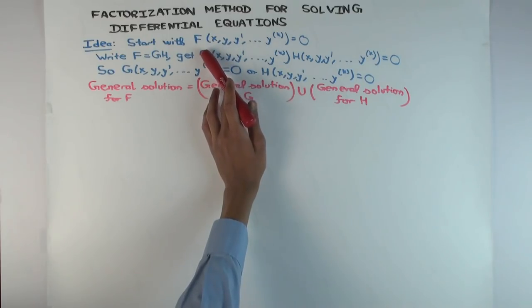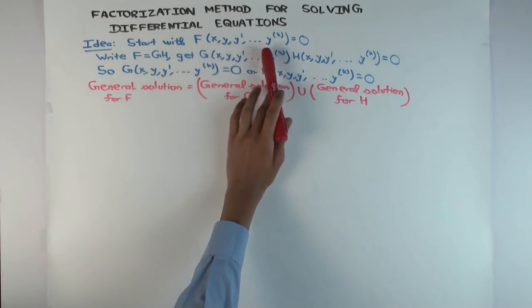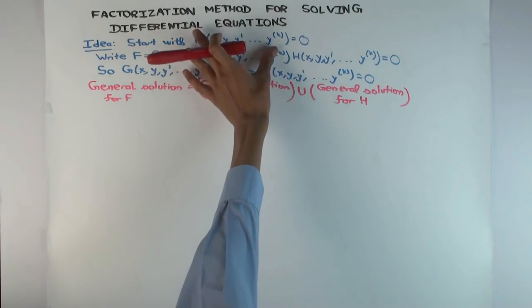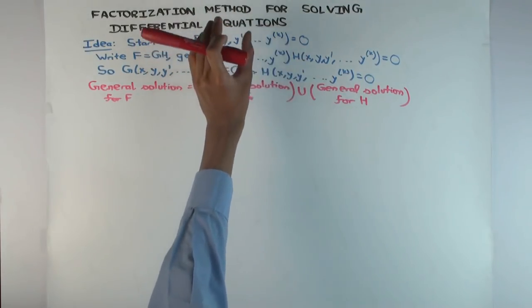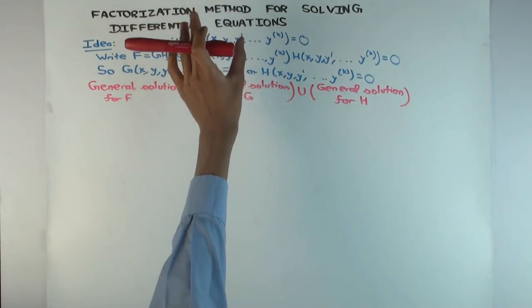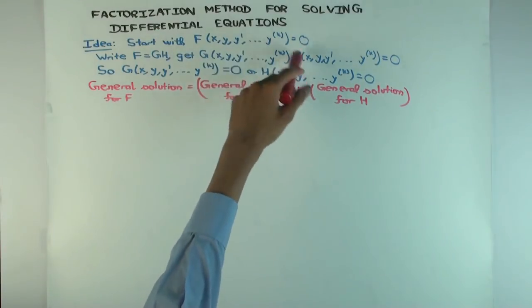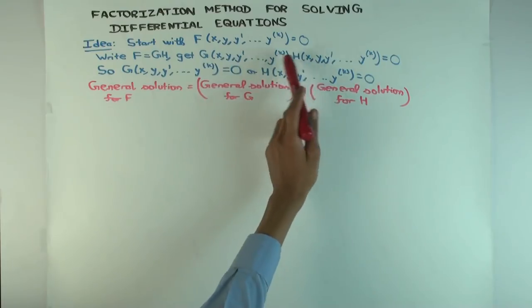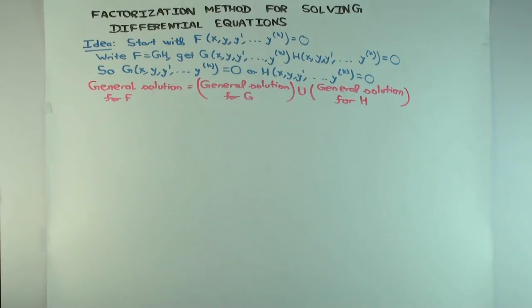Now the idea of factorization is you start with this, you first see if F can be factored. Remember if your equation is written as something equals something, you have to bring everything to one side first. Then try to factor that whole expression as a product of two expressions, so G and H, and now you're trying to solve G times H is zero.